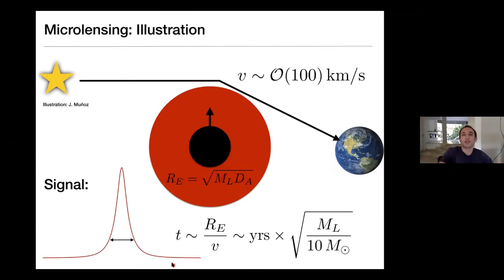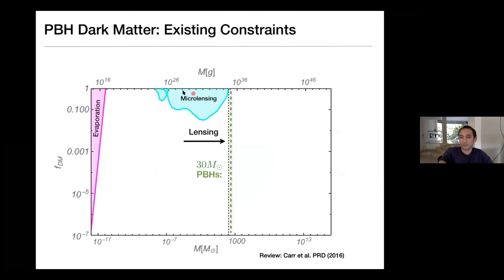If the lenses are very massive, this period would take years, meaning you wouldn't know whether you're at a peak right now or where you are. You'd have to observe stars for years and years. Of course, you don't observe just one star — you observe millions of stars. From the fact that you detect maybe a handful of events, you can put constraints on the abundance of MACHOs or primordial black holes. But this is hard to do for high masses — microlensing constraints certainly rule out lower mass ranges but don't really probe into the LIGO window.